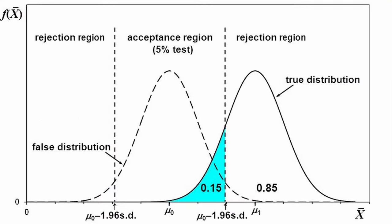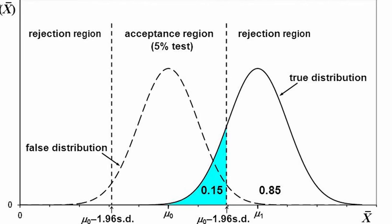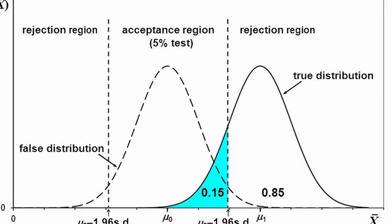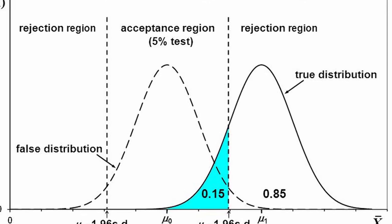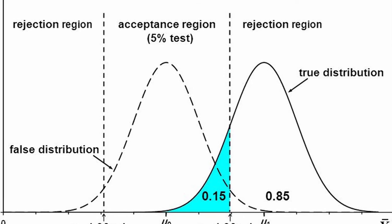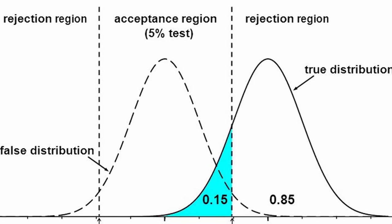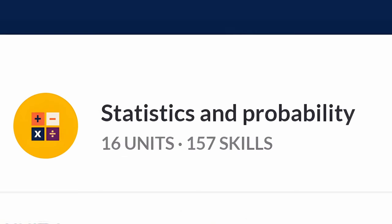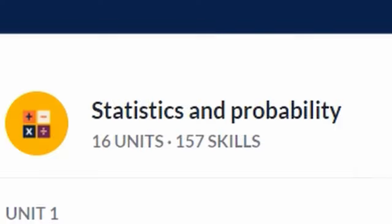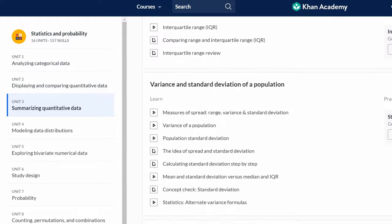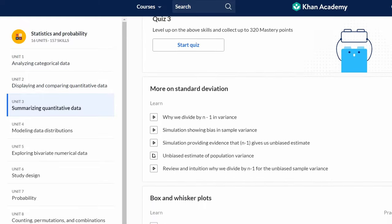In practical terms, math comes into play when constructing a hypothesis testing framework, analyzing data distributions, and transforming data for optimal machine learning model compatibility. To navigate these tasks, a foundational understanding of probability and statistics is key. For a swift yet comprehensive grasp of these concepts, I recommend Khan Academy's course on Probability and Statistics.